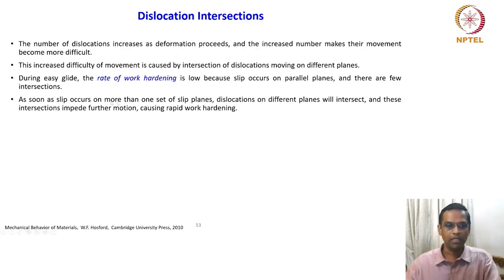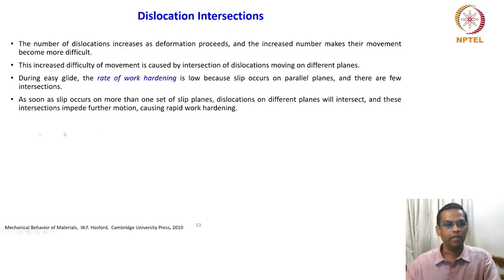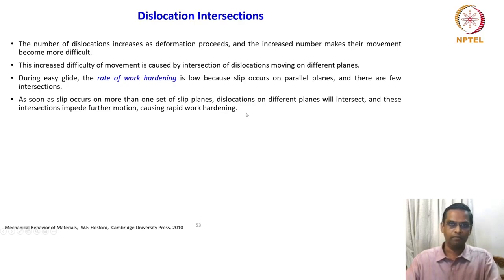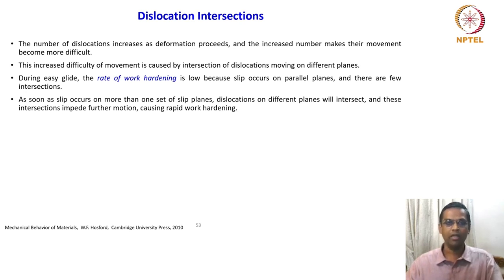As soon as slip occurs on more than one set of slip planes, dislocations on different planes will intersect and these intersections impede further motion, causing rapid work hardening. When slip occurs on only a few parallel planes, the glide is easy and not impeded by any other dislocation.